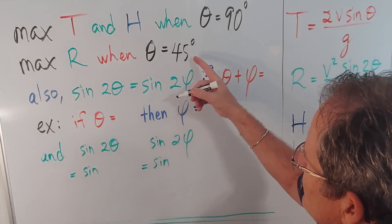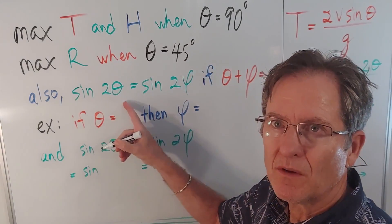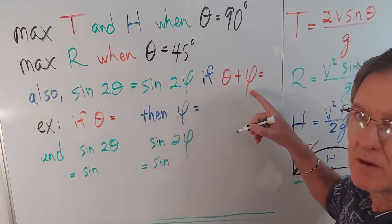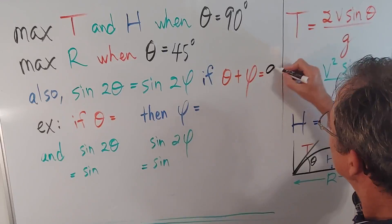It's also true that the sine of 2 theta equals the sine of 2 phi if theta plus phi equals 90 degrees.